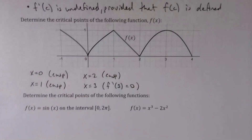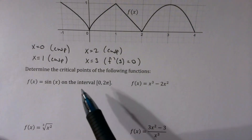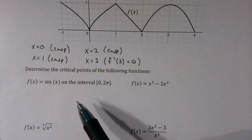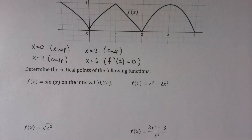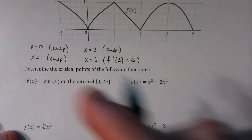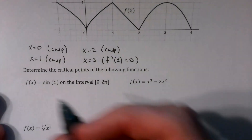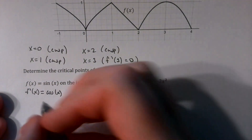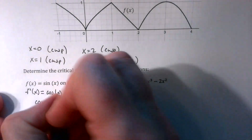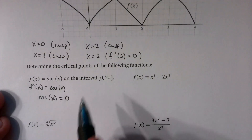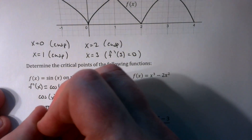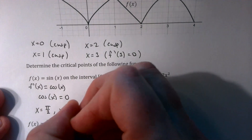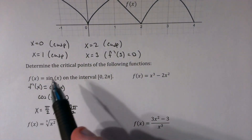To find critical points analytically, we take the derivative, set it equal to zero, and solve. For f(x) = sin(x), f′(x) = cos(x). Setting cos(x) = 0 on the interval [0, 2π], cosine is zero at x = π/2 and x = 3π/2. Those are the critical points of sin(x), and if you graph sine, you'll notice something important happening at those particular values.